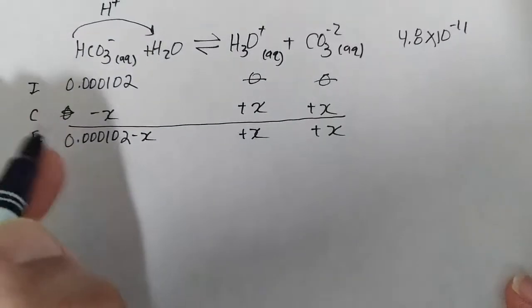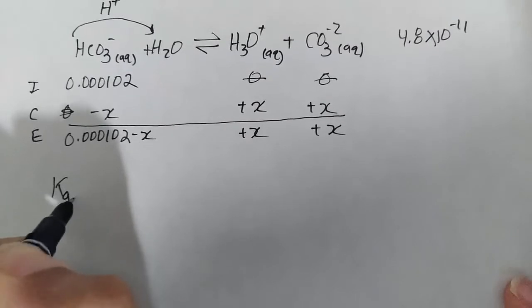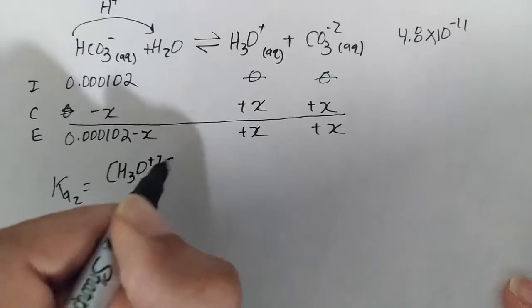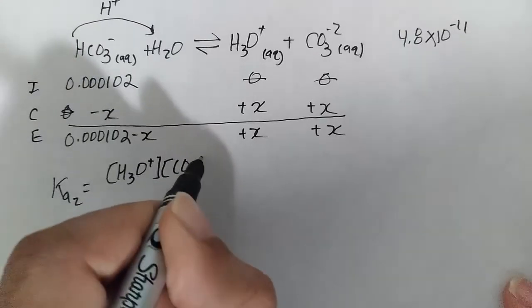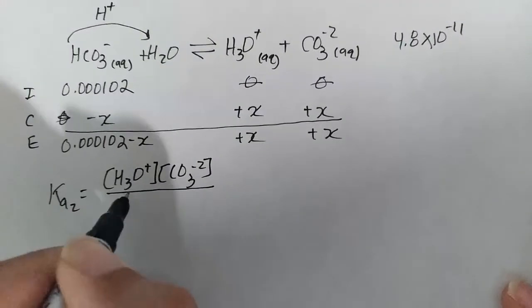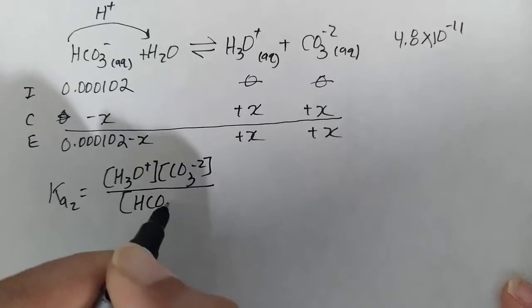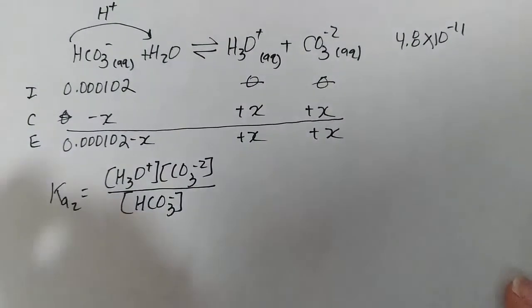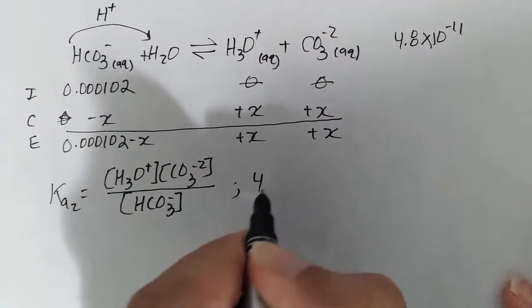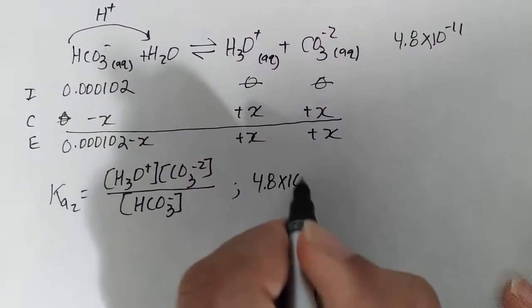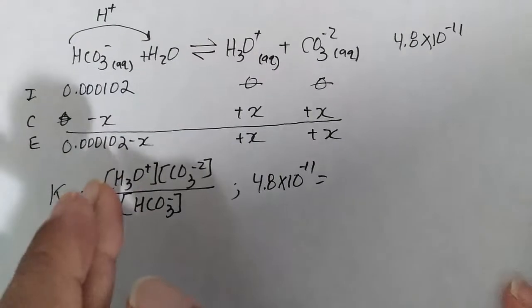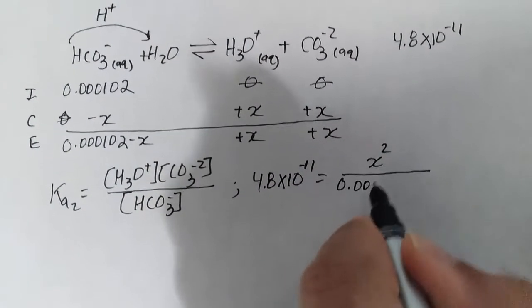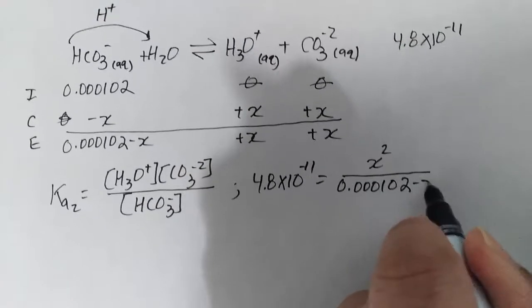Now this will be our Ka2, our second ionization, which is H3O+ or H+ times CO3^2- divided by HCO3^-. And Ka here is going to be 4.8 × 10^-11 equals x and x is x^2 divided by 0.000102 - x.